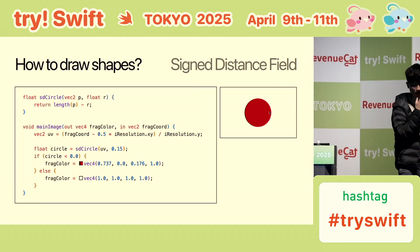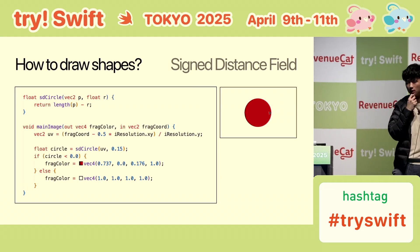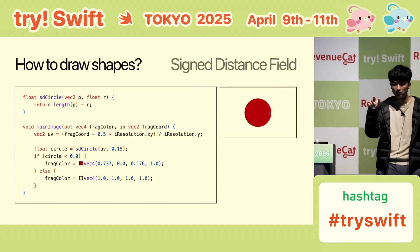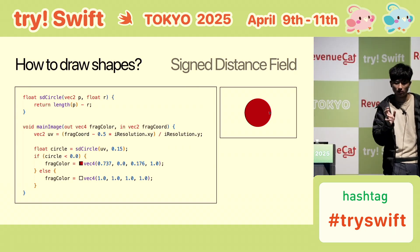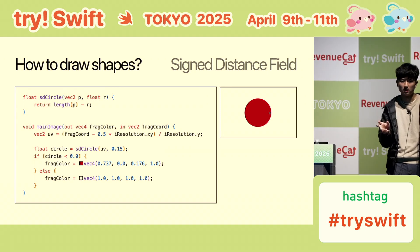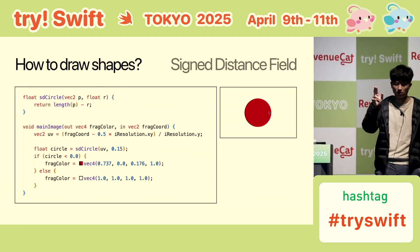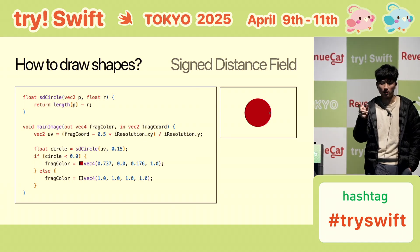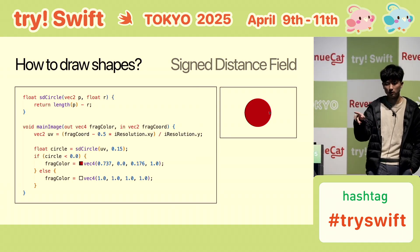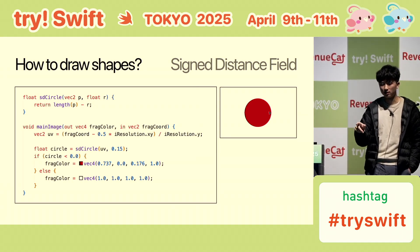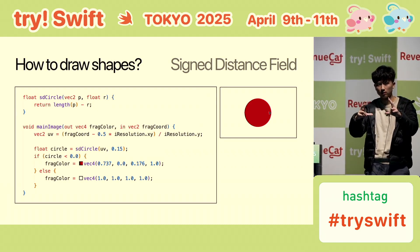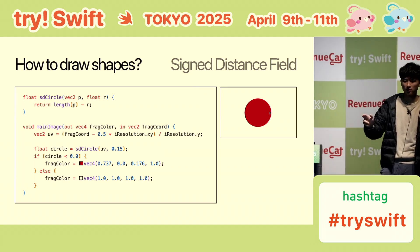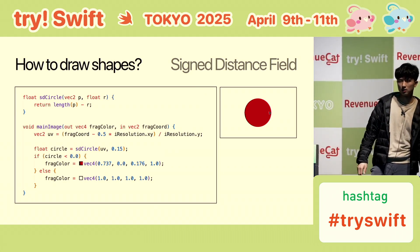Take the pixel at the edge of the circle on the right — say 0.15, 0. The length is 0.15, and 0.15 minus 0.15 is 0, so we make it white — that's the border of the circle. Everything inside the circle has a negative distance; everything outside is positive. That's how you make shapes like this.